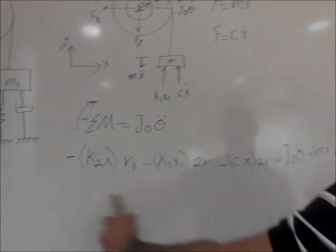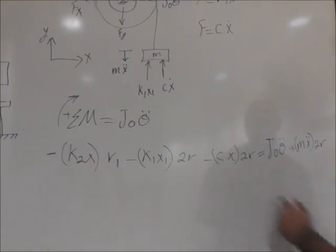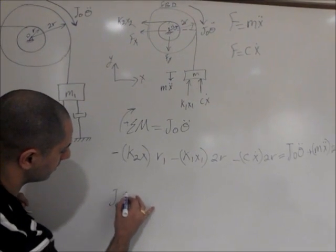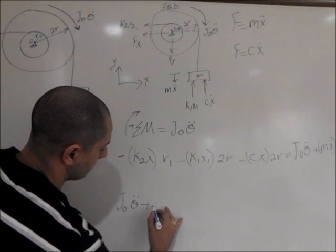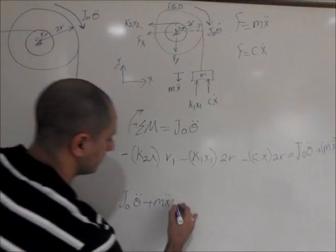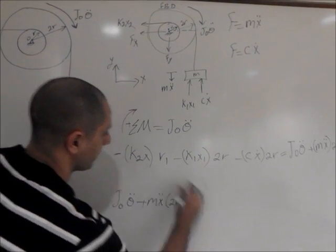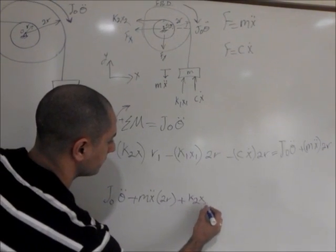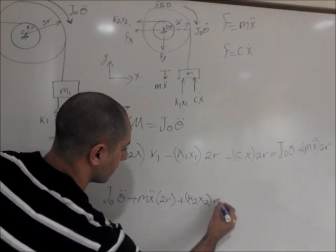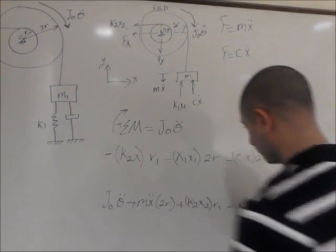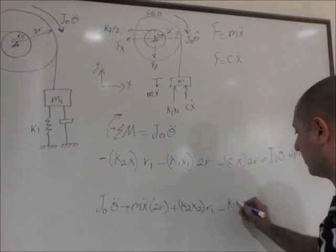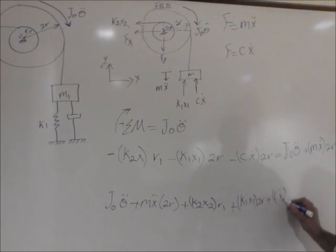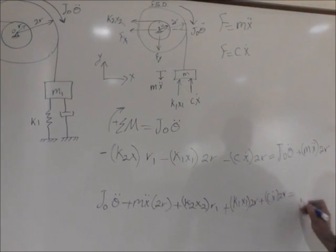Based on this, this is pretty much your equation of motion, but you can actually break it down further. And let's actually take this to the other side. So we will say moment of inertia J_O theta double dot plus M X double dot times 2R. And let's move everything on that side. We will say plus K2 X2 times R1 plus K1 X1 times 2R plus C X dot times 2R equals 0.